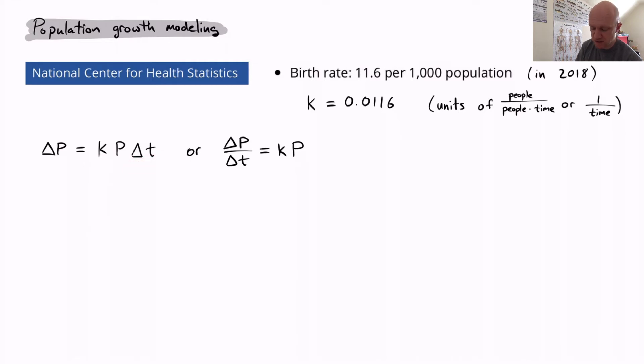Now, if I divide both sides by delta t, I get this slightly different looking equation, delta P over delta t equals kP. Now, what you'll notice here is this is an average rate. It's the change in population over time, when I'm measuring that over the course of one year.